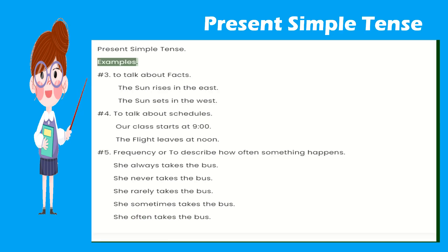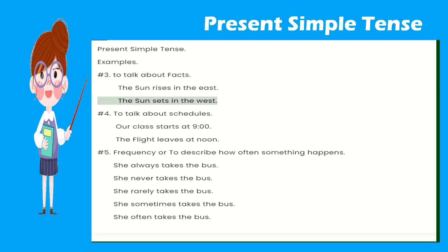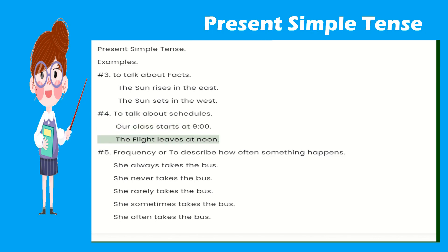Examples. Number three, to talk about facts: The sun rises in the east. The sun sets in the west. Number four, to talk about schedules: Our class starts at nine o'clock. The flight leaves at noon.